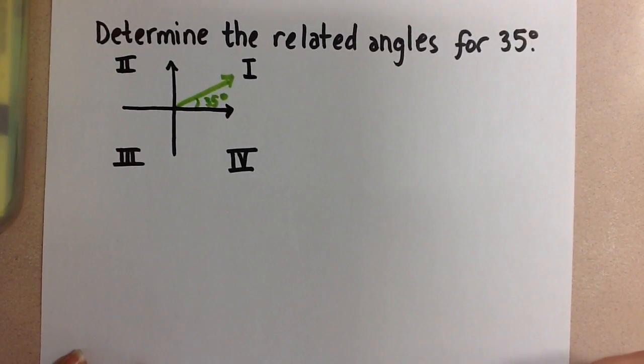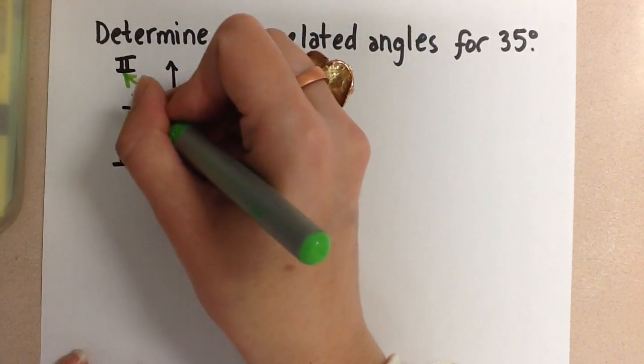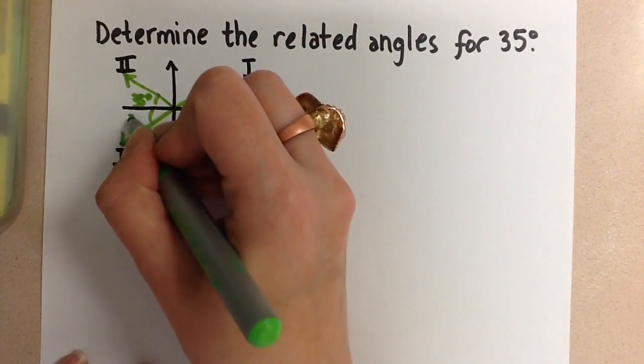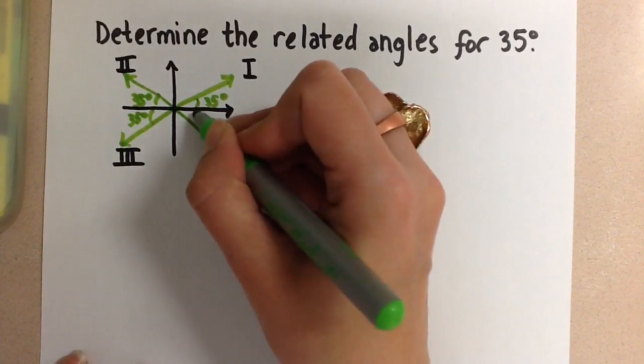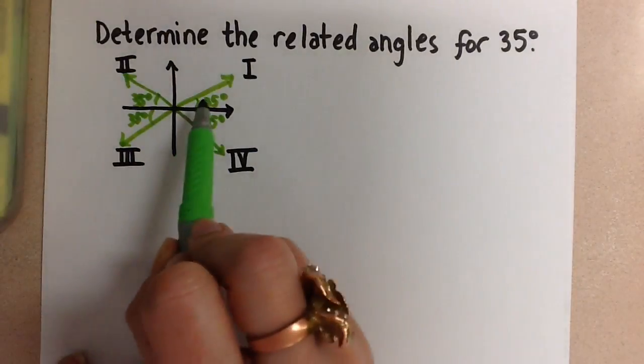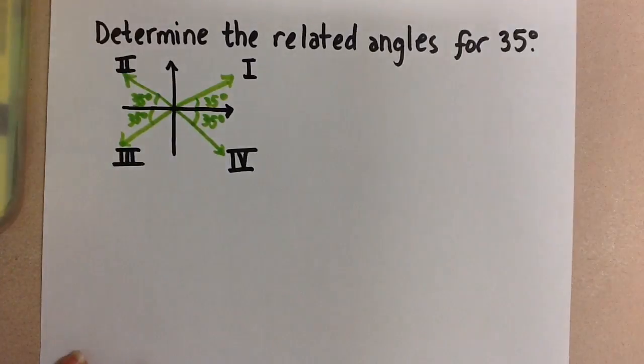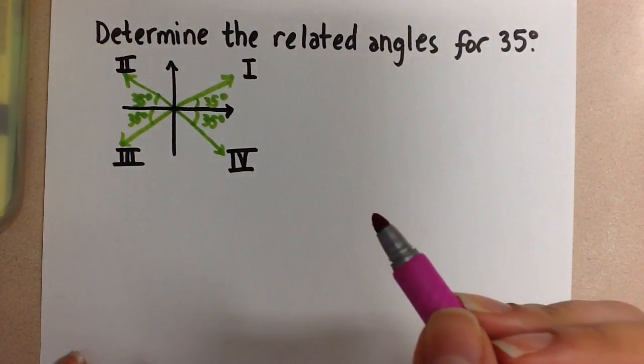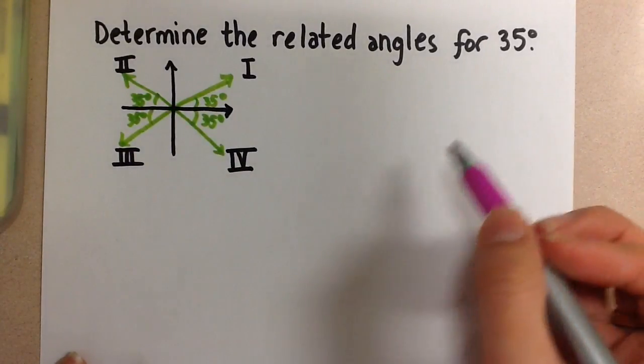So that's going to be the related acute angle that we use for each of the principal angles that we're going to find. This means we're going to have a related acute angle of 35 degrees here, here, and also here. So we've taken that acute angle and figured out the related acute angle in each of the other quadrants, and now we're going to find what each principal angle is for the other three angles.